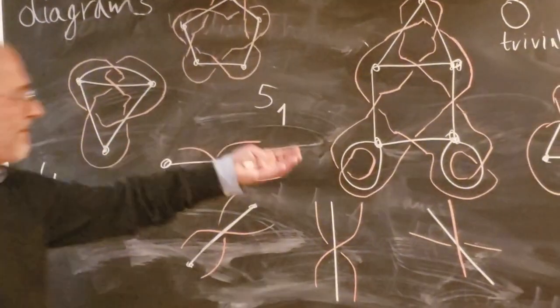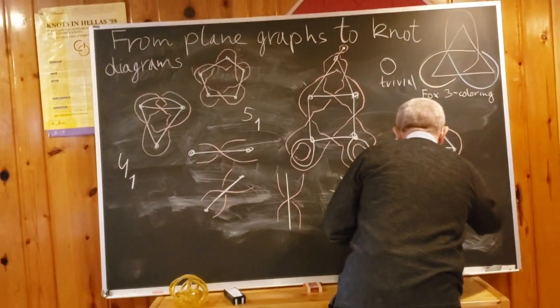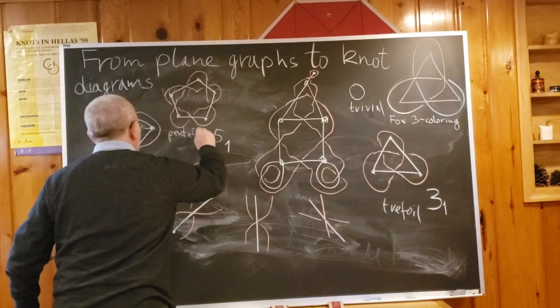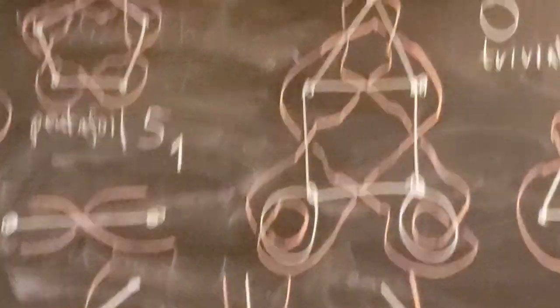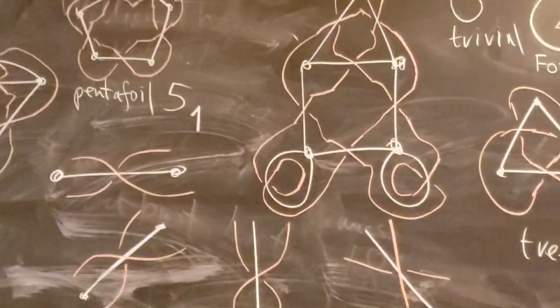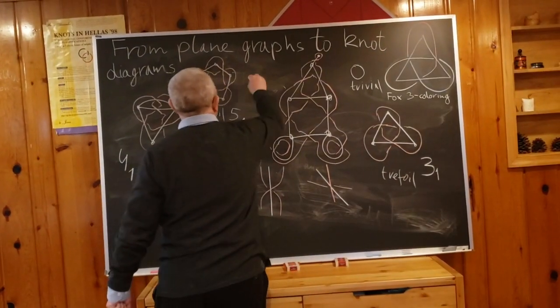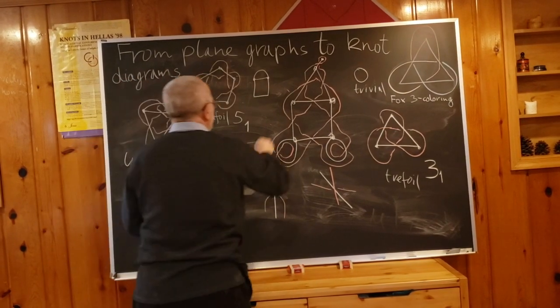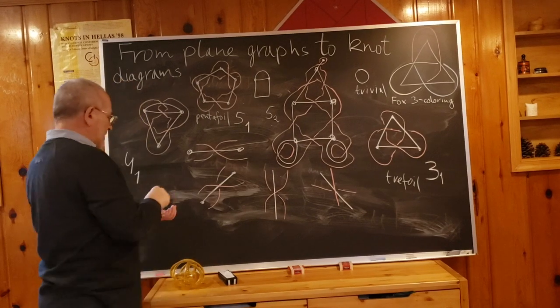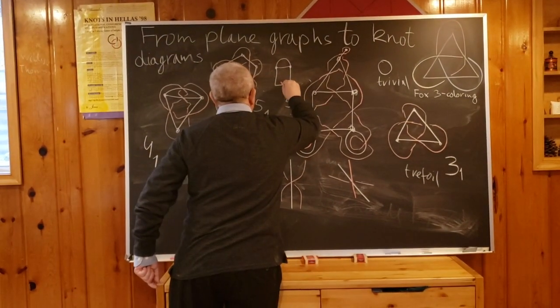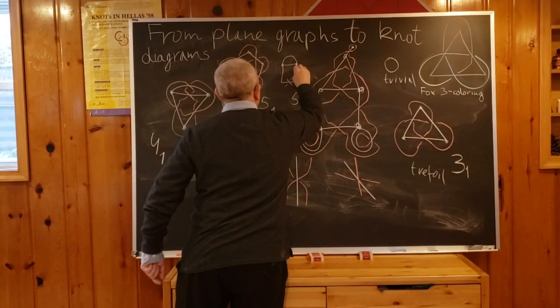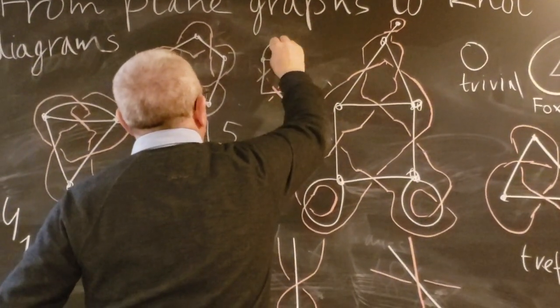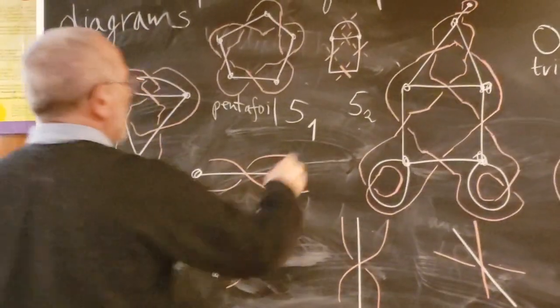Some people call this the trefoil, so some people call this the pentafoil—of course, words of Greek origin. And there are other knots of five crossings. Yes, there's one more that is not so difficult to draw, so I will draw it here. Instead of a pentagon, we take a square, but we double one edge. This will be called 5_2. So let's draw this. First, we have to have crossings. We have all crossings. Now we have to connect them along edges.